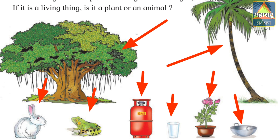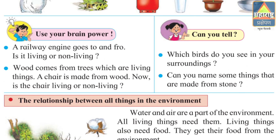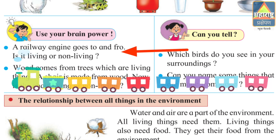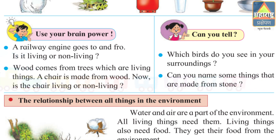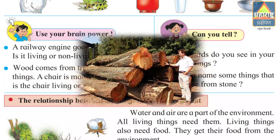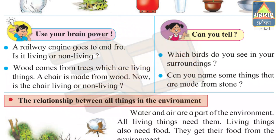A railway engine goes to and fro. Is it living or non-living? Wood comes from the trees, which are living things. A chair is made from wood. Is the chair a living thing or a non-living thing?